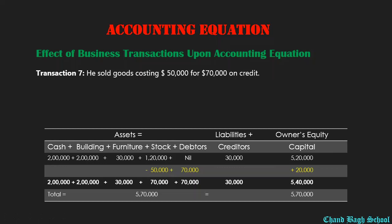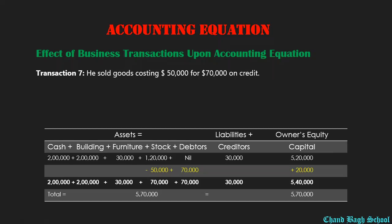چونکہ یہ sale credit basis پر کی جا رہی ہے، اس میں cash receive نہیں ہو رہا۔ بلکہ ہمارے debtors increase کر رہے ہیں۔ Debtors بھی ہمارے assets ہوتے ہیں — وہ customers جنہوں نے ہم سے credit basis پر چیزیں خریدی ہوتی ہیں۔ اس طرح سے accounts receivable $70,000 کے ساتھ increase کر رہے ہیں۔ اس transaction پر $50,000 کا expense تھا، تو $20,000 کا net difference ہمارا profit ہے۔